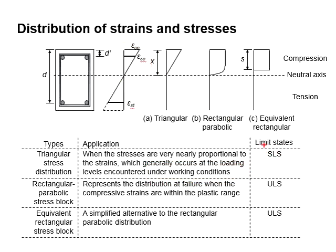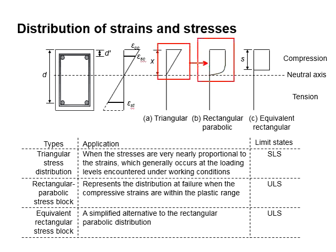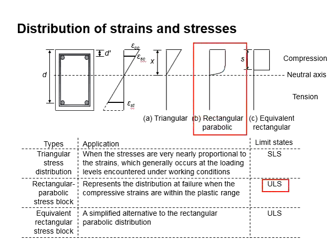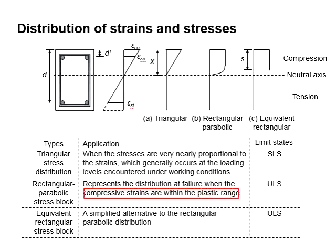Beyond the service limit state, the stress starts to accumulate within the sections. The triangular stress block now transforms into a rectangular parabolic stress block. At the ultimate limit state, a rectangular parabolic stress block is obtained. This occurs when the compressive strain is within the plastic range.